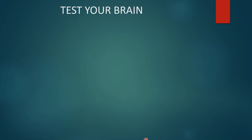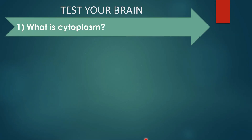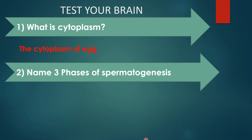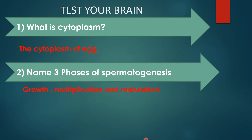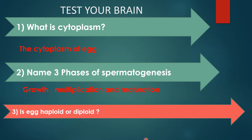Let's continue testing your brain. What is ooplasm? The cytoplasm of the egg is called ooplasm. Name the three phases of oogenesis: growth phase, multiplication phase, and maturation phase. Is the egg haploid or diploid? It is haploid.